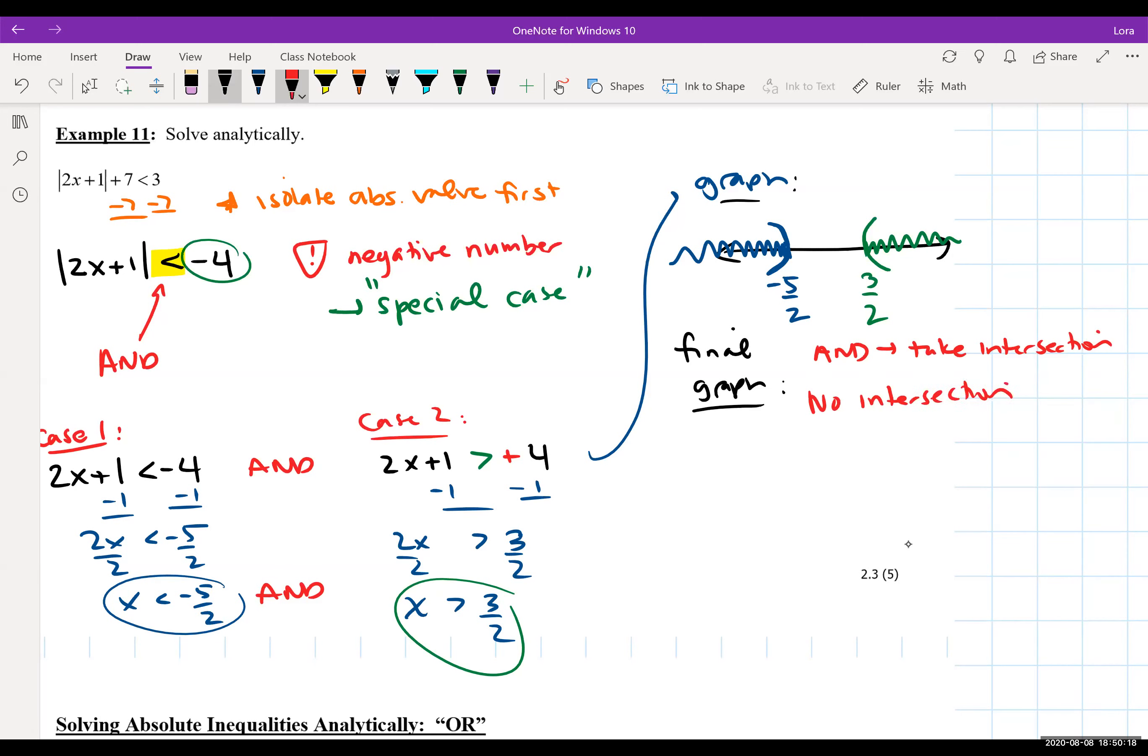And if there's no intersection, your graph would be blank, which means you have no solution. So if you wanted to write the solution, you would say there's not a solution, or sometimes people write the null set. Either way is fine.